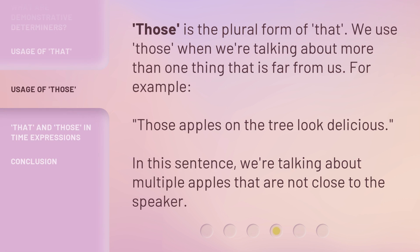Those is the plural form of that. We use those when we're talking about more than one thing that is far from us. For example, those apples on the tree look delicious. In this sentence, we're talking about multiple apples that are not close to the speaker.